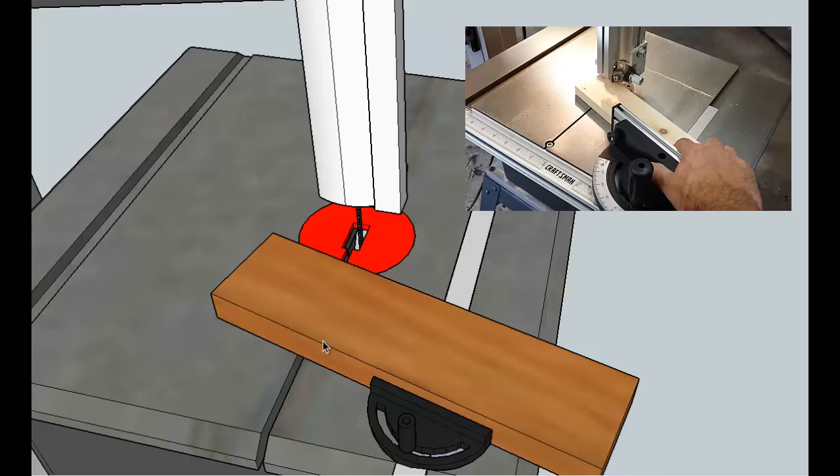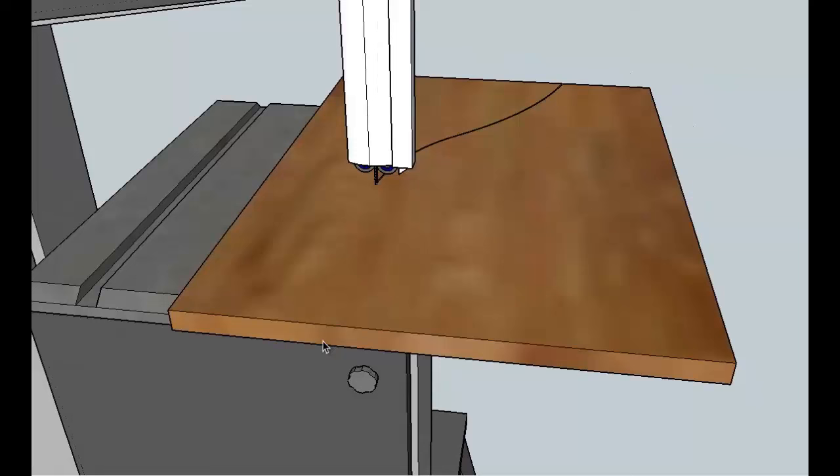The bandsaw is also able to do a lot of curved cuts, which is nice. The trick about curved cuts is you have to make sure your pivot point is the blade. You can't try to push the block of wood left or right to make it go that direction. You have to pivot at this point.